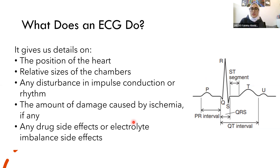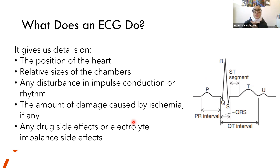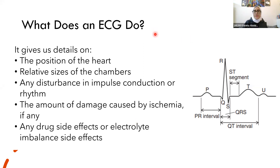Someone asked: does the AV node produce a P wave when it takes over? No. If an impulse originates at the AV node, it goes straight to the ventricles — the atria won't contract. On the ECG you'd see only the QRS complex and T wave, but no P wave. This immediately indicates the impulse isn't coming from the atria, which is a problem.